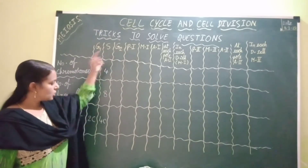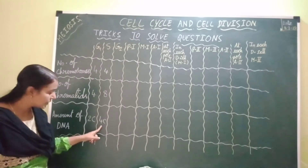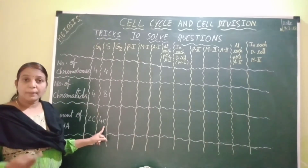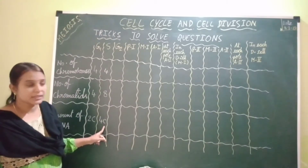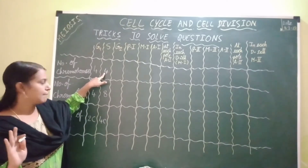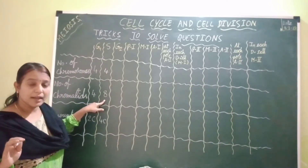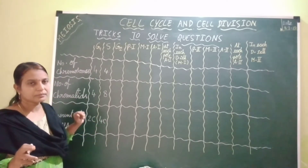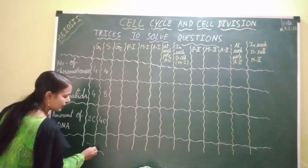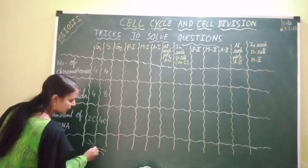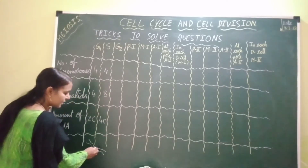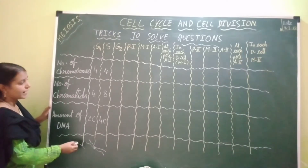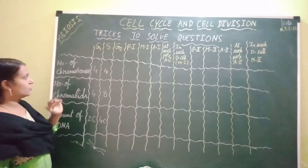When the cell enters S phase, DNA replication occurs and the amount of DNA doubles to 4C. The ploidy remains the same and the number of chromosomes also remains the same. However, the number of chromatids doubles — because each chromosome is now represented by two chromatin fibers due to DNA replication. One chromatin fiber replicates to form another, which attaches to its parent. So during S phase each chromosome has two chromatin fibers, unlike G1 where each had only one.